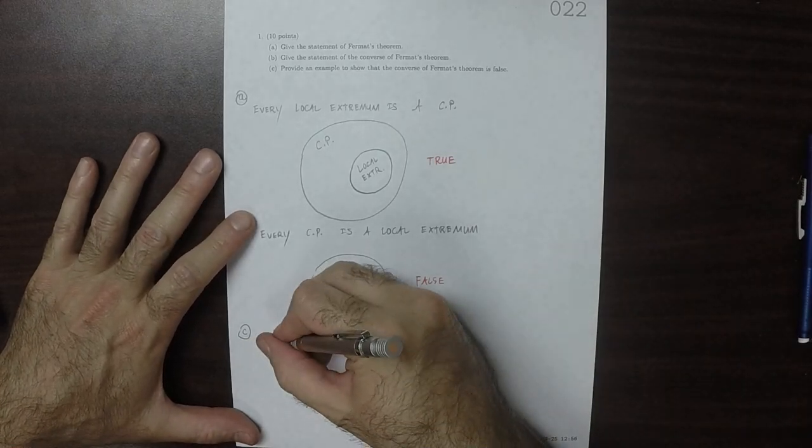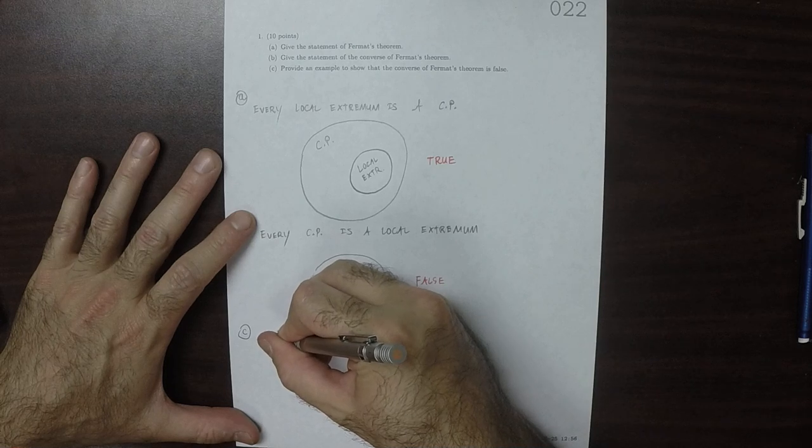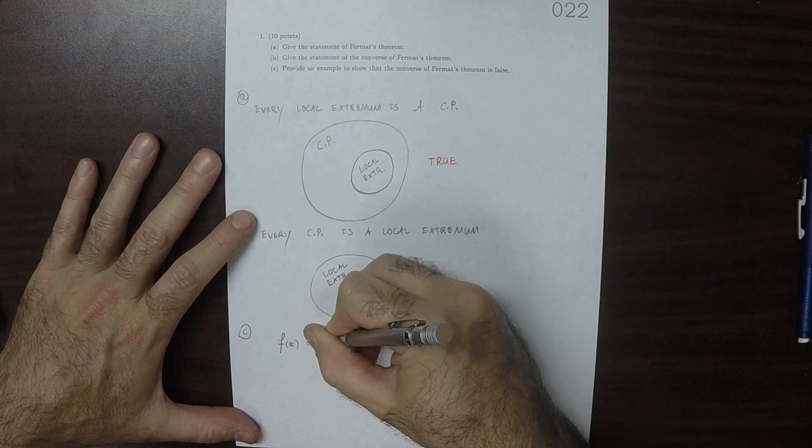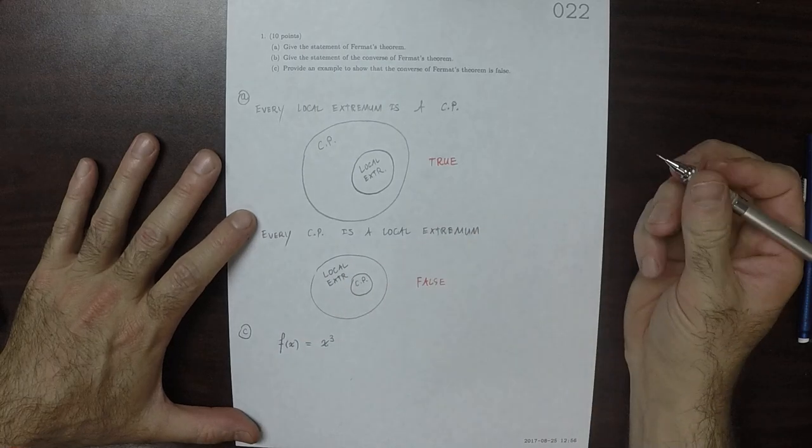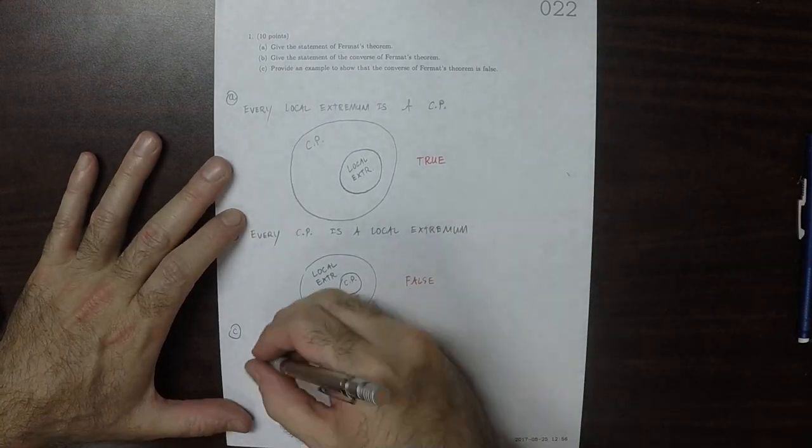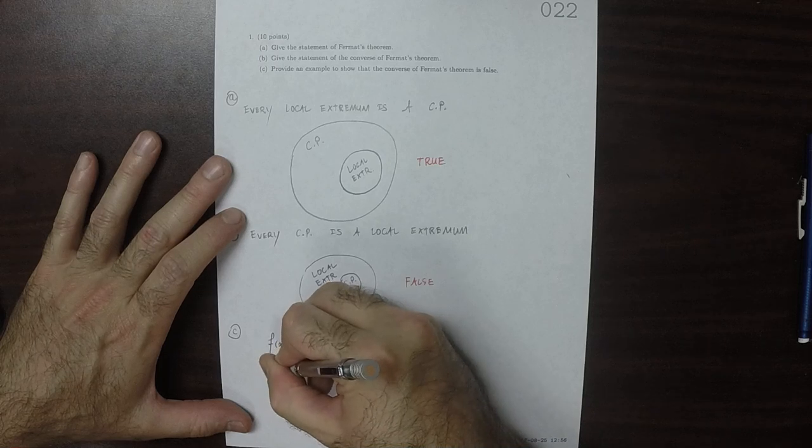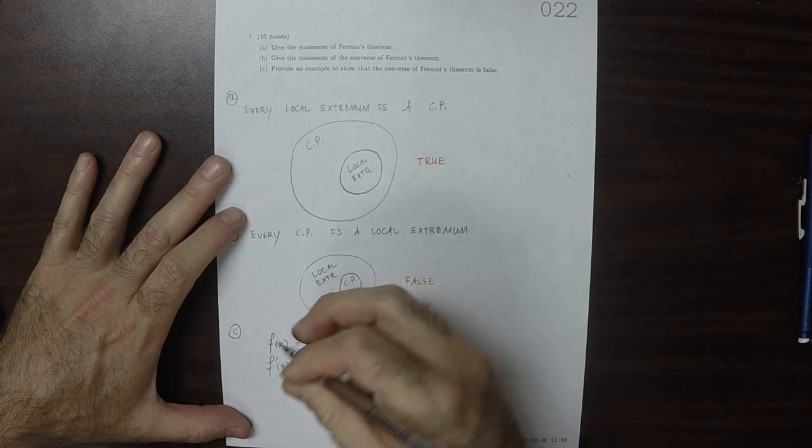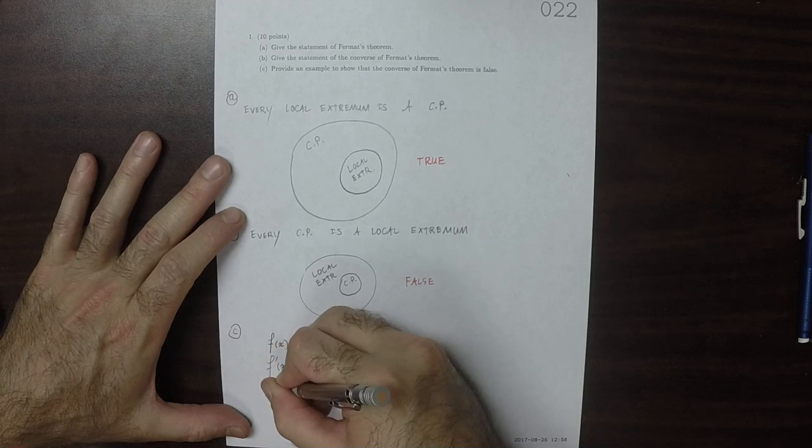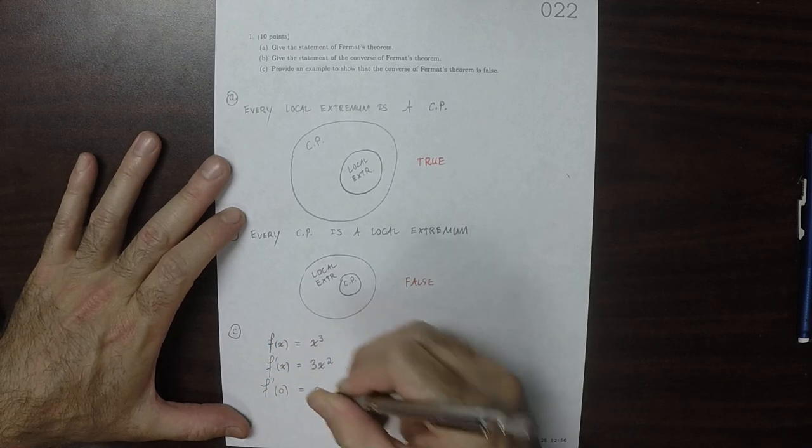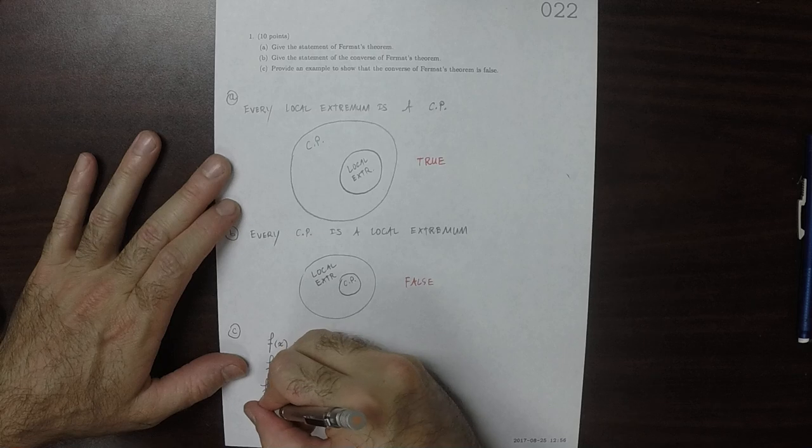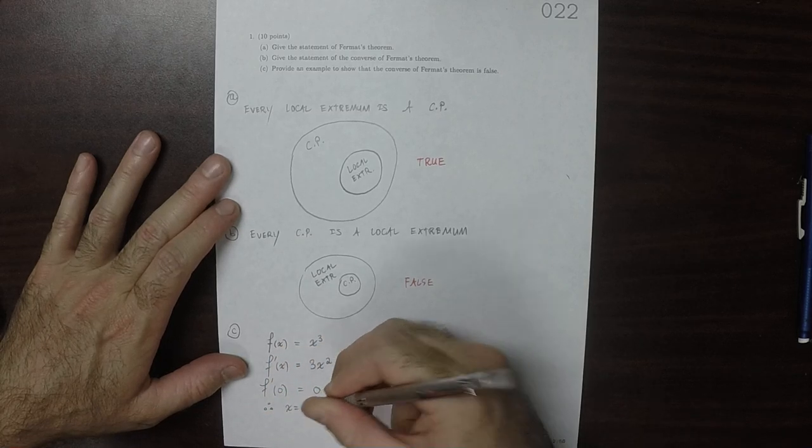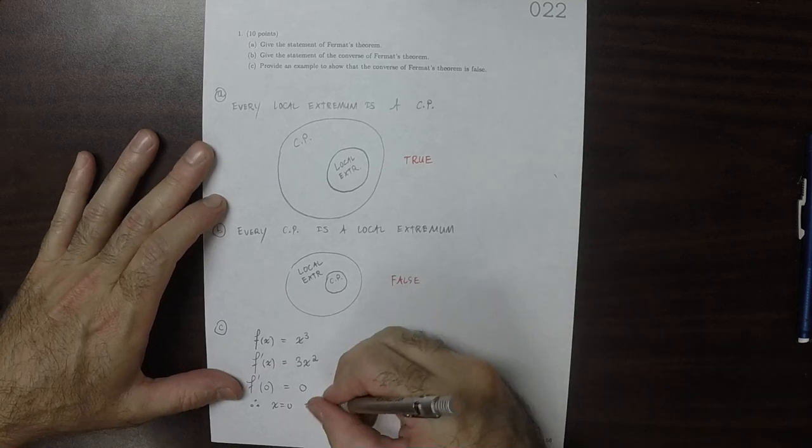So the standard example is f of x equals x cubed, because the derivative of x cubed is 3x squared, and of course the derivative at 0 is 0. Plugging in 0, therefore x equals 0 is a critical point.